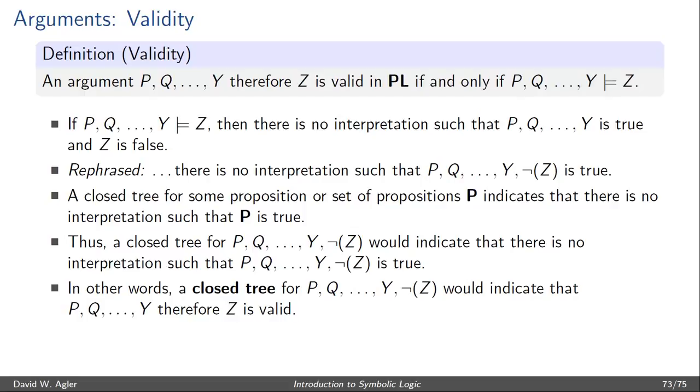So in short, we can test an argument like P, Q, Y, therefore Z using a truth tree by taking the stack of formulas P, Q, Y, not Z, and if that stack of formulas yields a closed tree, then we know the argument is valid.